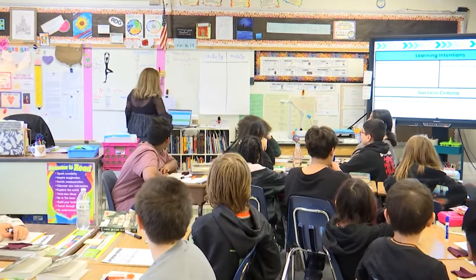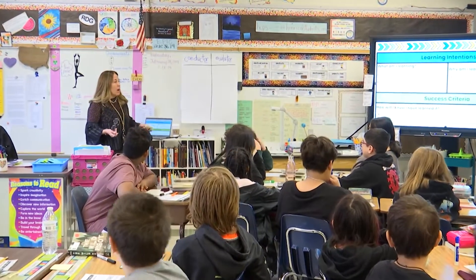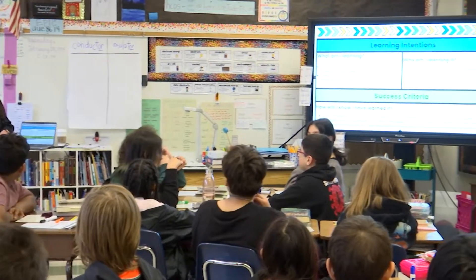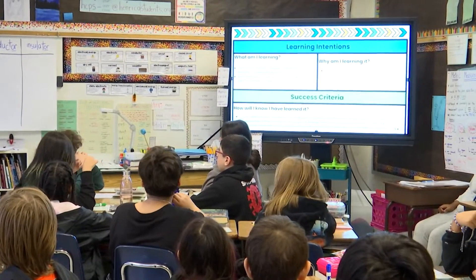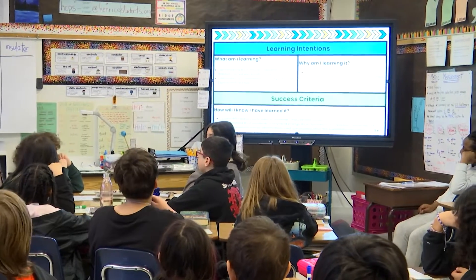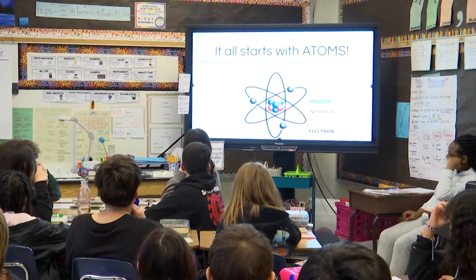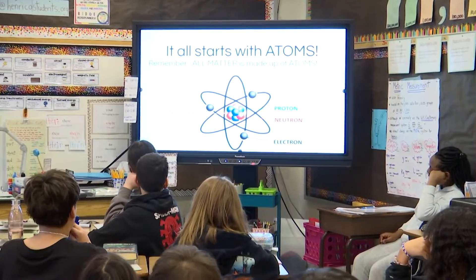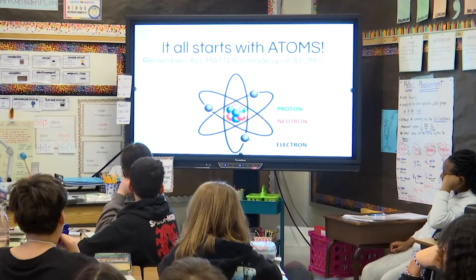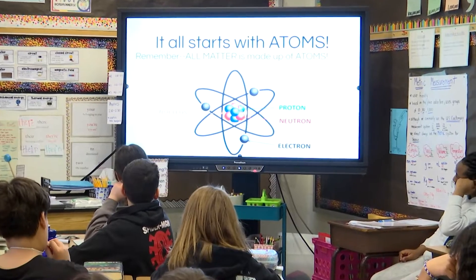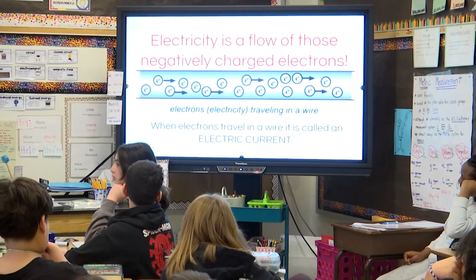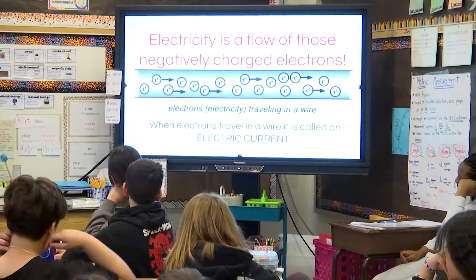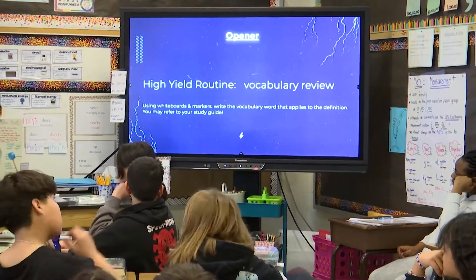So we are going to be able to tell how electricity works, what makes it work, and then we're going to also learn an extra part of electricity that we haven't explored yet. Electricity is always associated with electrons, the part of the atom that is negatively charged, and it flows through the wire — that is called electric current.